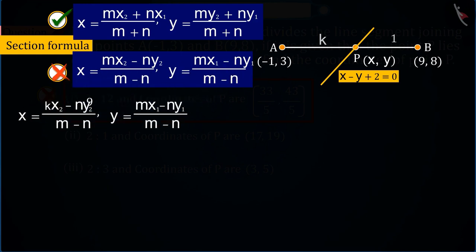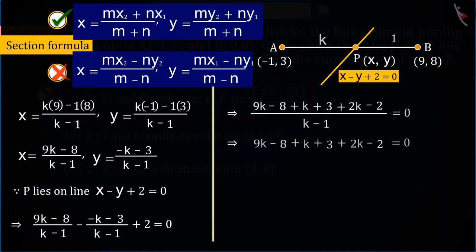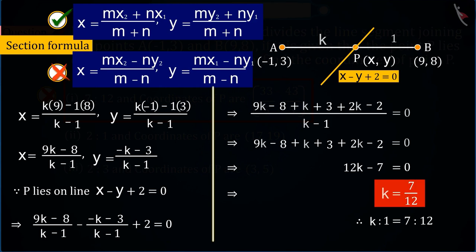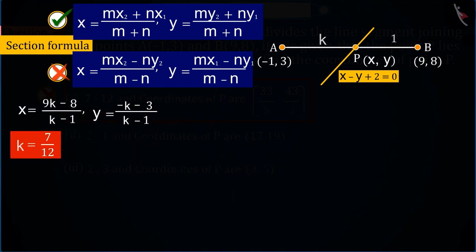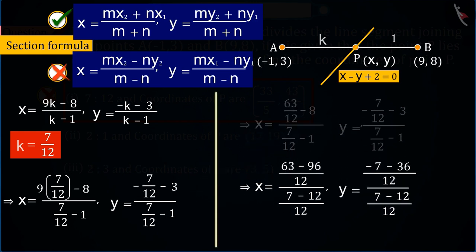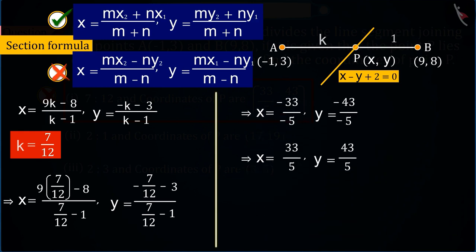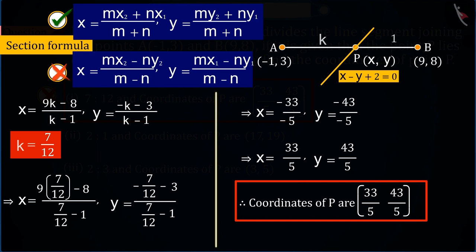On solving which, the value of k is 7/12, and solving further on this basis, the coordinates of point P are found wrong.